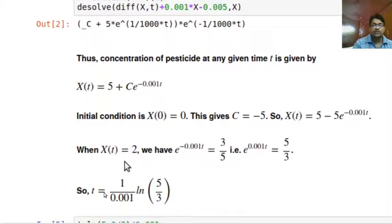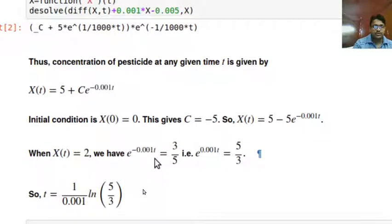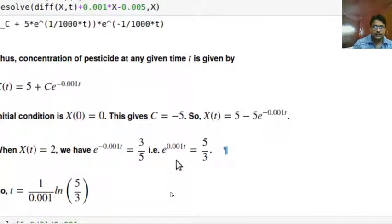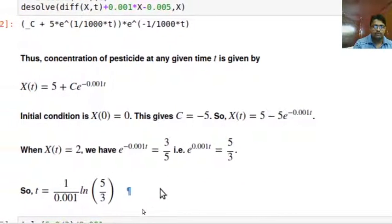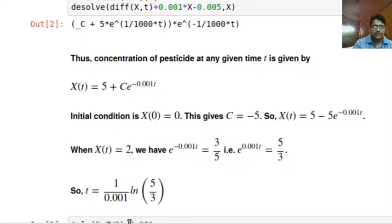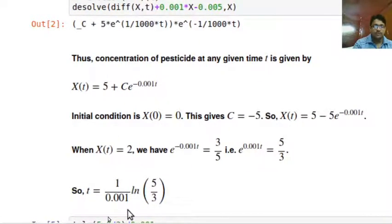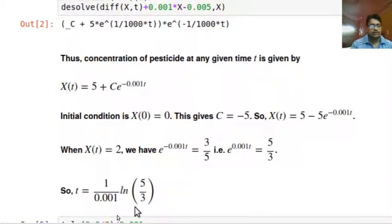When X(t) equal to 2, we have e to the power minus 0.001*t equal to 3/5, or if you take the reciprocal it's e to the power 0.001*t equal to 5/3. From there you get t as 1/0.001 multiplied with ln(5/3), natural logarithm of 5/3.